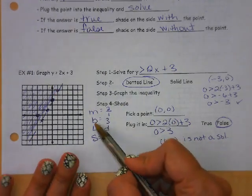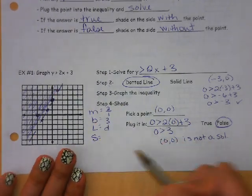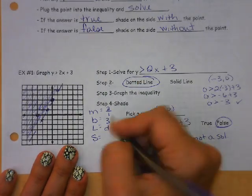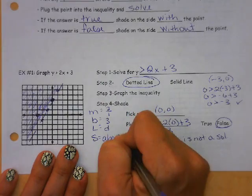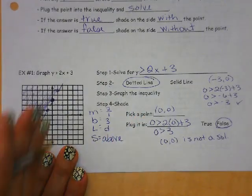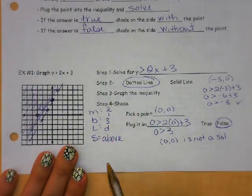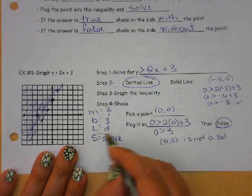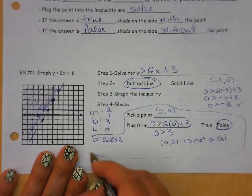So here on our MBLS shading, here is the second way you can do this. This is a greater than symbol, so that means we need to shade above our line. So you can use this method, or you can use the pick a point method to decide which way you want to shade.